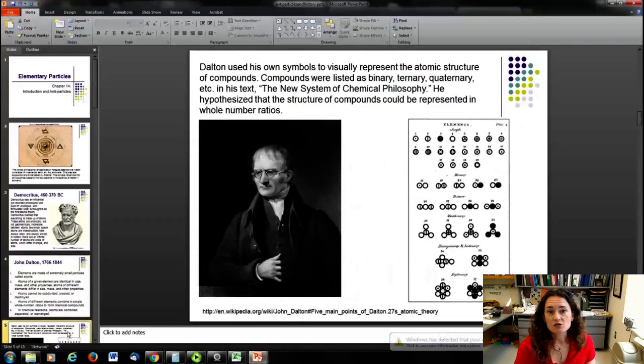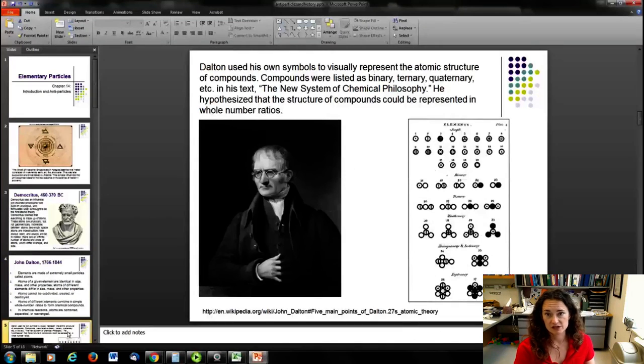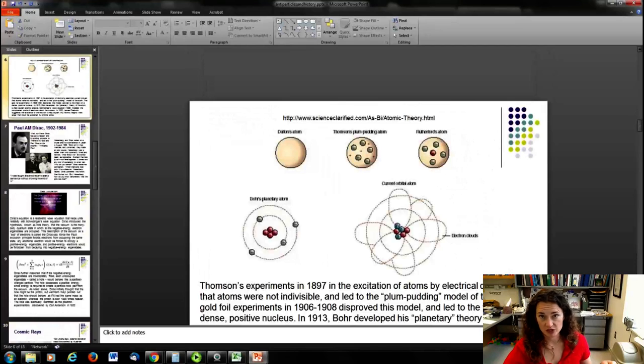Now, Dalton used his own symbols to visually represent the atomic structure of compounds. Compounds are listed as binary, ternary, quaternary, etc. in his text, which was entitled The New System of Chemical Philosophy. And he hypothesized that the structure of compounds could be represented in whole number ratios. And here's some sketches from his textbook over here, with the binary, and the ternary, and the quaternary, and all that kind of stuff. So, the father of modern chemistry with a pretty accurate picture of the atom.